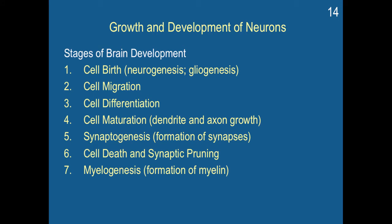Here are the overall stages of brain development. You have cell birth — neurogenesis and gliogenesis — followed by cell migration, cell differentiation, and cell maturation, where cells develop dendrites and grow axons that connect with each other. Then you have synaptogenesis, since synapses can only form once cells start to connect. After that, you have cell death and synaptic pruning, keeping the strongest connections. Finally, you have myelinogenesis — the formation of myelin — to help connections between neurons be strong and quick.